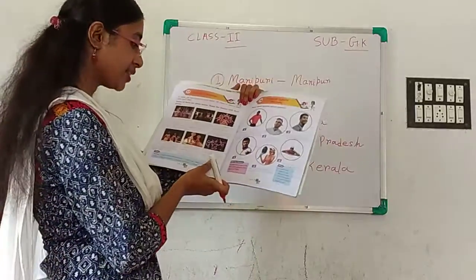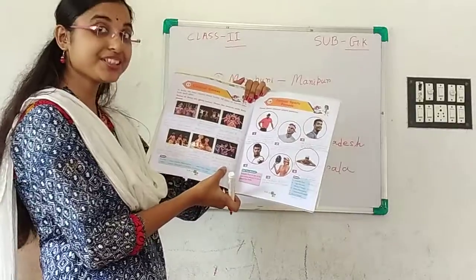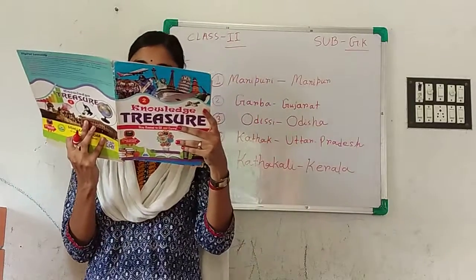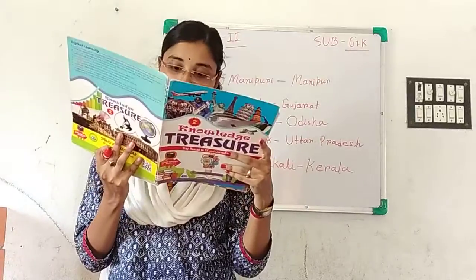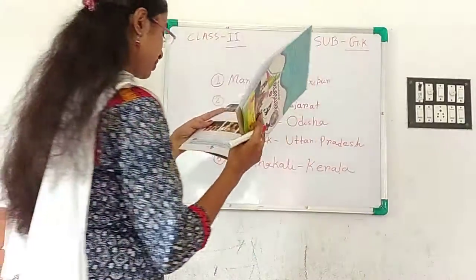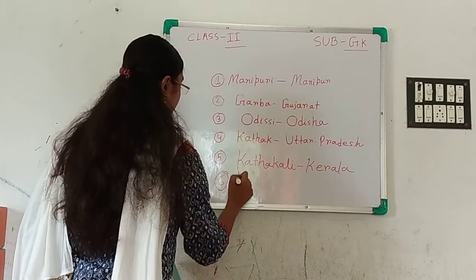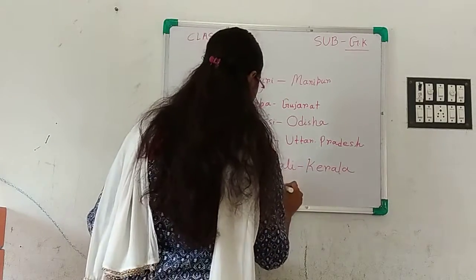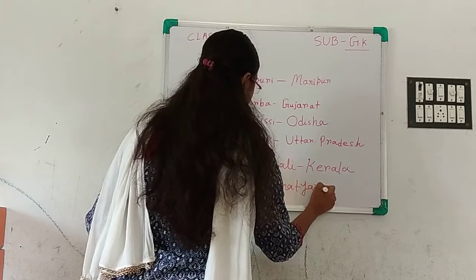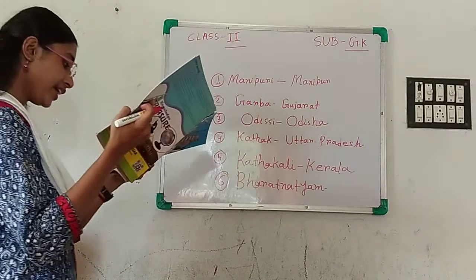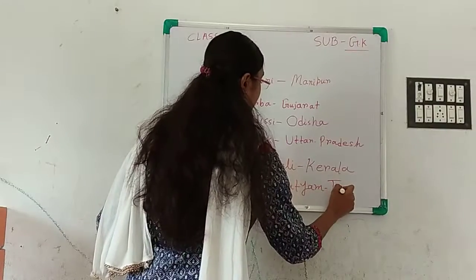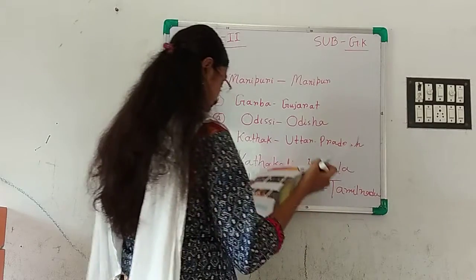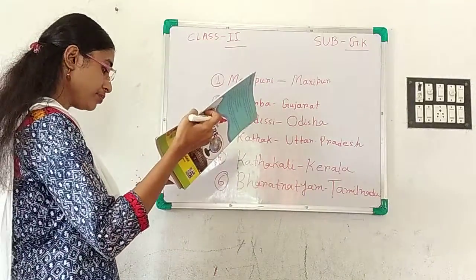Next, and the last, number 6. Which dance form is this? Can you tell me? Bharatnatyam, from Tamil Nadu. Bharatnatyam is also called Sadhir Attam. B-H-A-R-A-T-A-N-A-T-Y-A-M. Tamil Nadu.